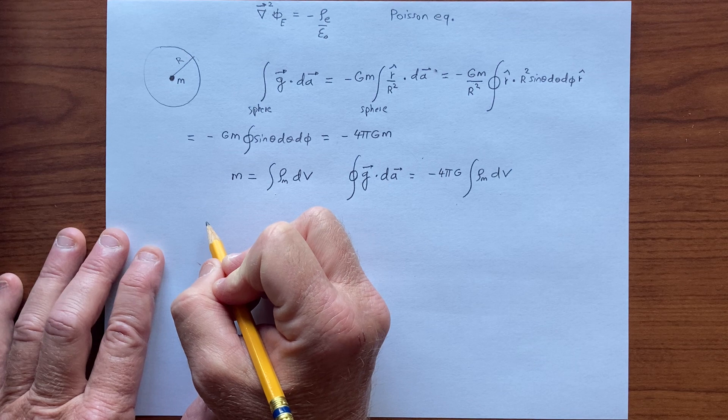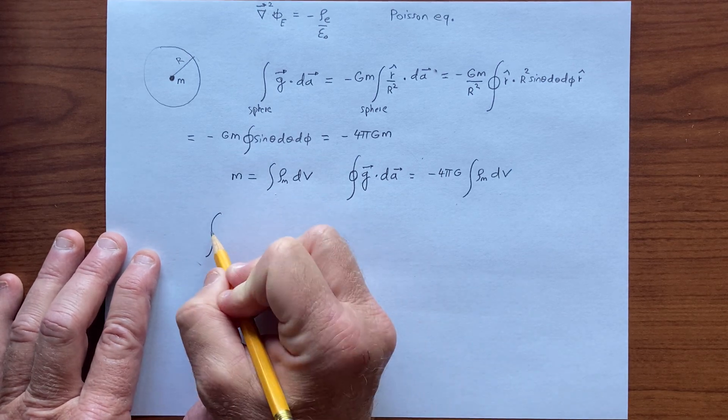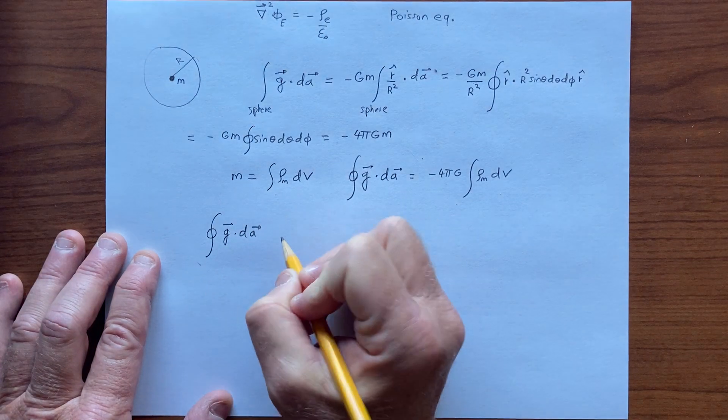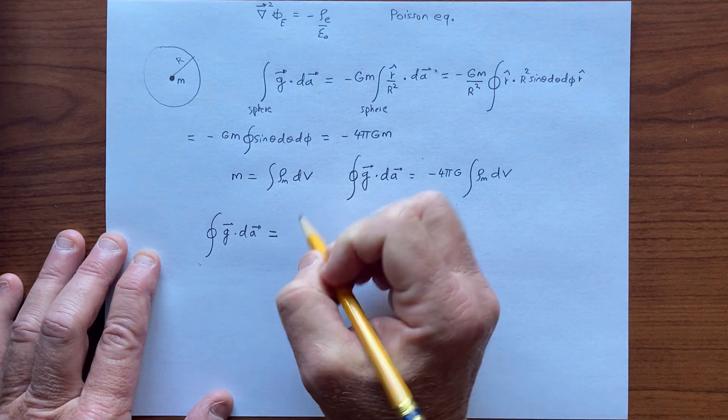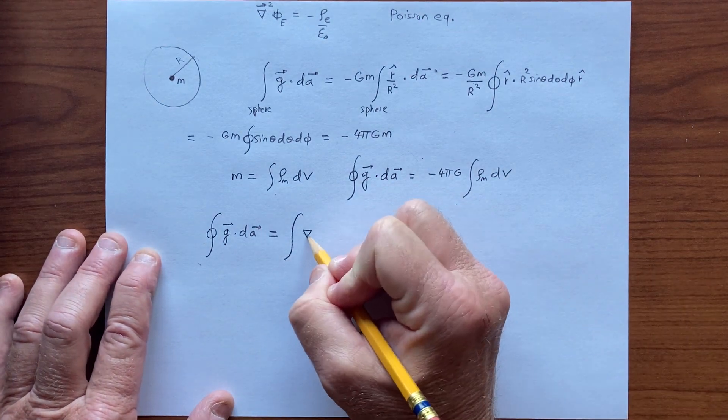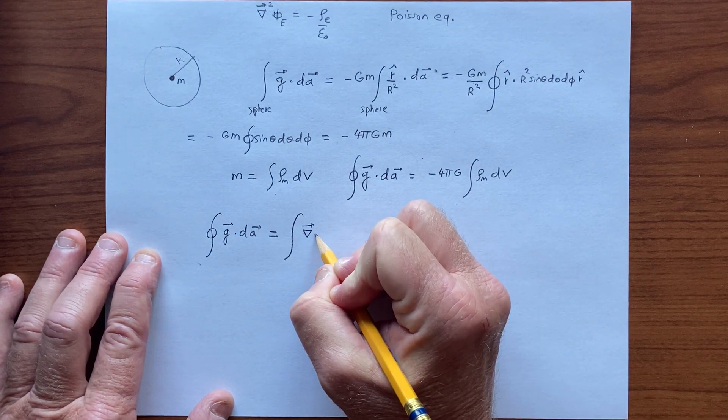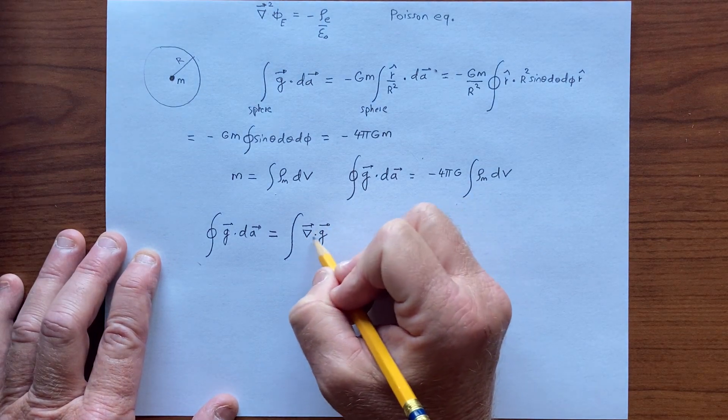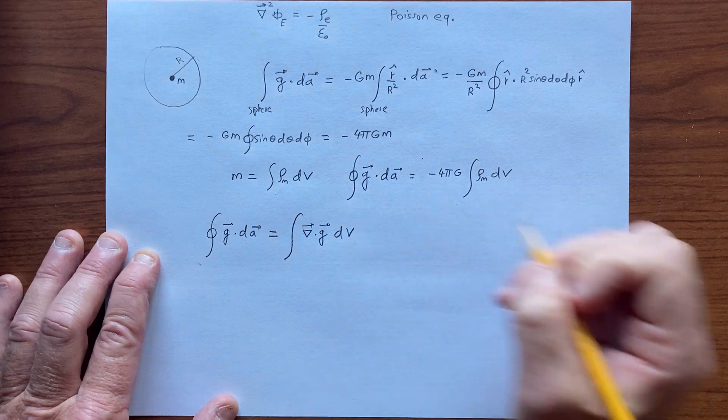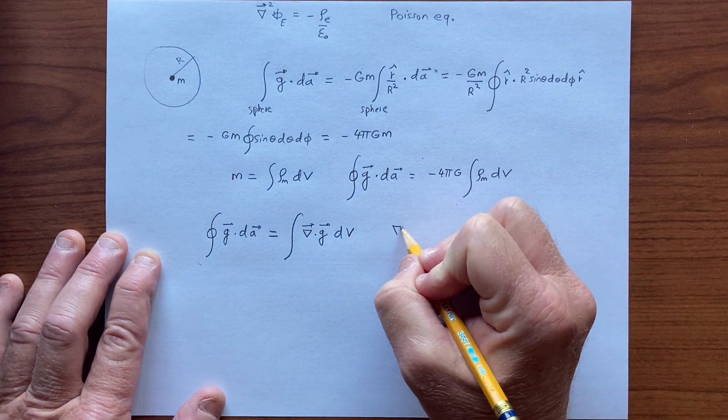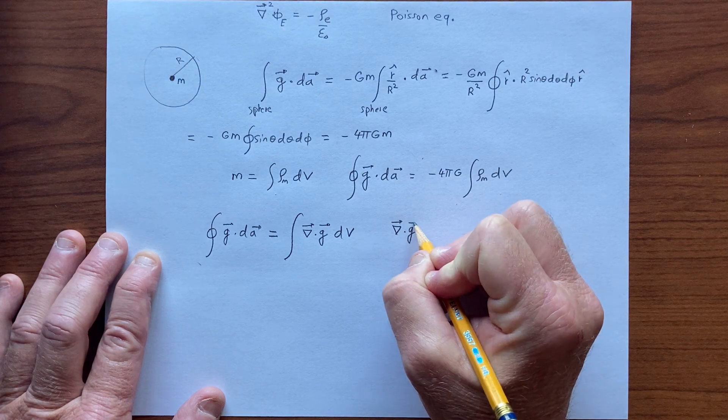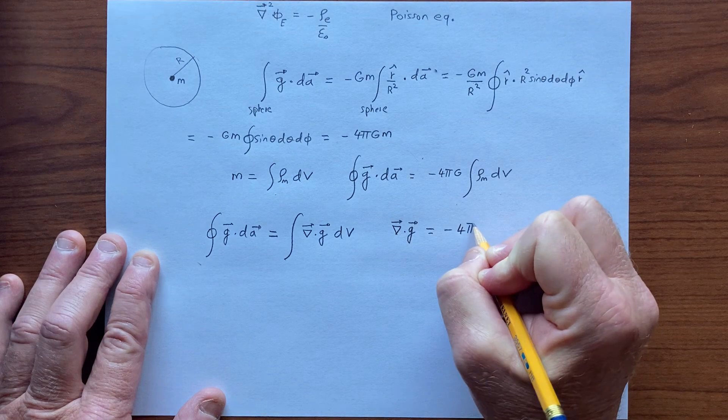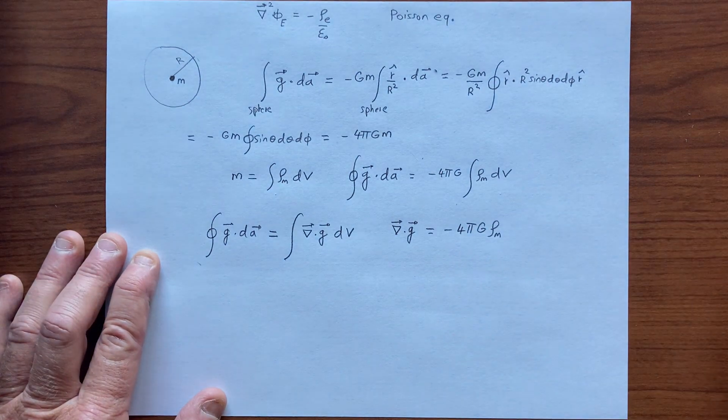And so, of course, the usual theorem applies, and we know that we integrate this dot dA. That's going to equal to the divergence of the acceleration field, analogous to the divergence of the electric field integrated over the volume. And so we have that the divergence of the gravitational acceleration field is equal to minus 4 pi g rho mass.